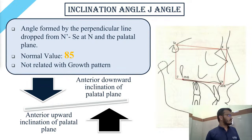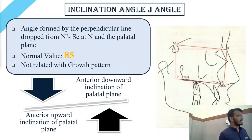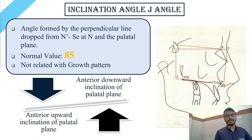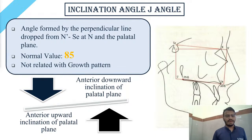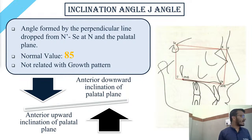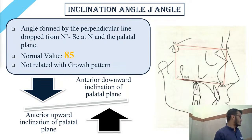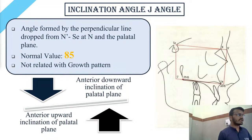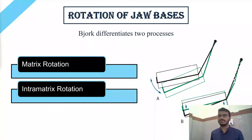The inclination angle, also called the J angle, is measured between the palatal plane and the perpendicular drawn from the soft tissue nasion onto the palatal plane. The average value is 85 degrees. Notably, it is not related to any growth pattern. When this angle increases, there is upward inclination of the palatal plane; when it decreases, there is anterior downward inclination of the palatal plane.